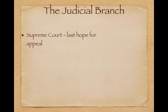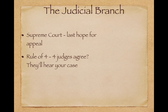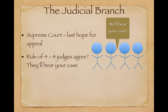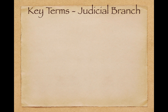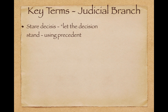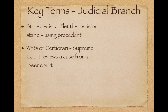Know those three layers of the judicial branch. The Supreme Court is the last hope for appeal. There's an important thing called the rule of four — if four judges agree, they'll hear your case. All you need is four out of nine judges to agree to take a look, and the Supreme Court will hear it. Presidents pick justices that share similar views — that's part of their legacy. Stare decisis means 'let the decision stand' — this is using precedent to determine an outcome.